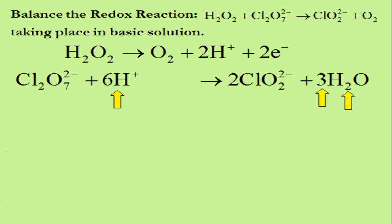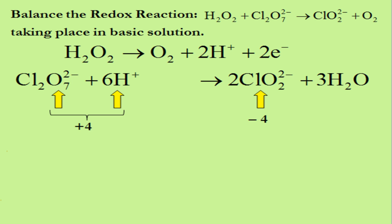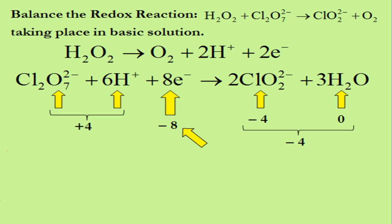The next step is to balance ionic charge. The total charge on the left side is negative two plus positive six, which is positive four. The total charge on the right side is two times negative two, or negative four, plus zero, which is negative four. The charges are equal and opposite, but they must be the same. To balance charge, we add electrons to the more positive side. Adding eight electrons to the left side gives the left side a net charge of positive four plus negative eight, which is negative four. So the charge is now balanced at negative four on both sides, and this half-reaction is balanced in acid solution.